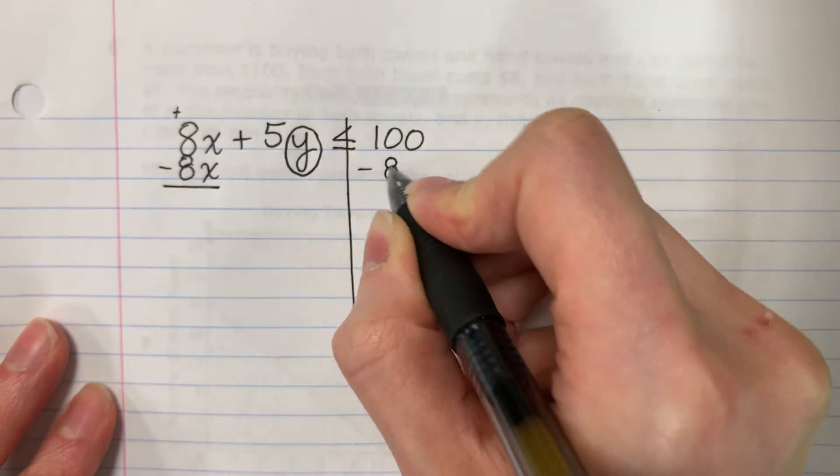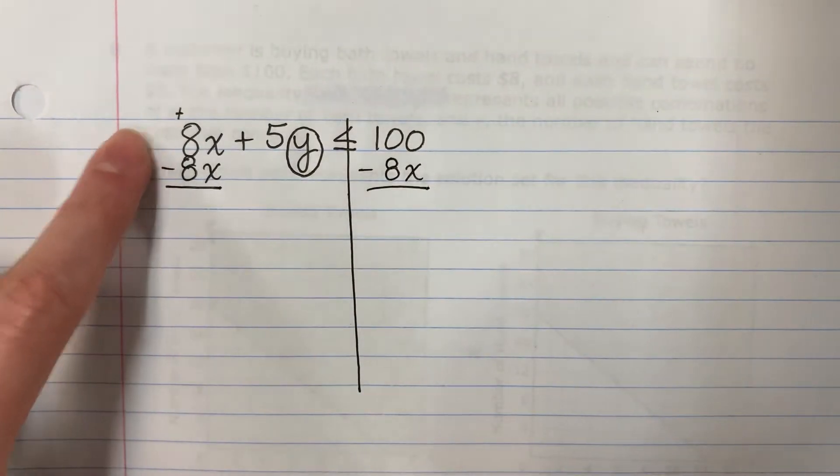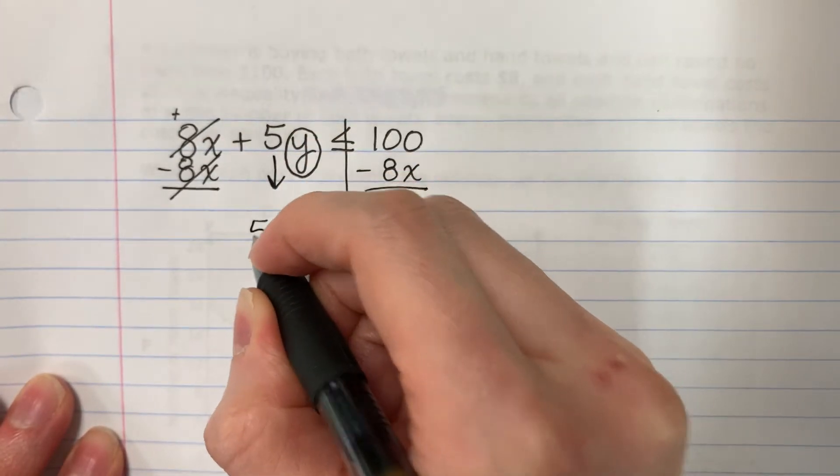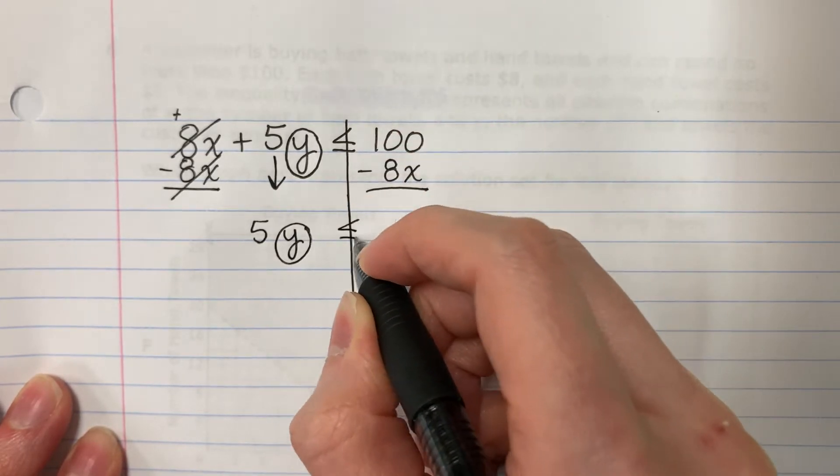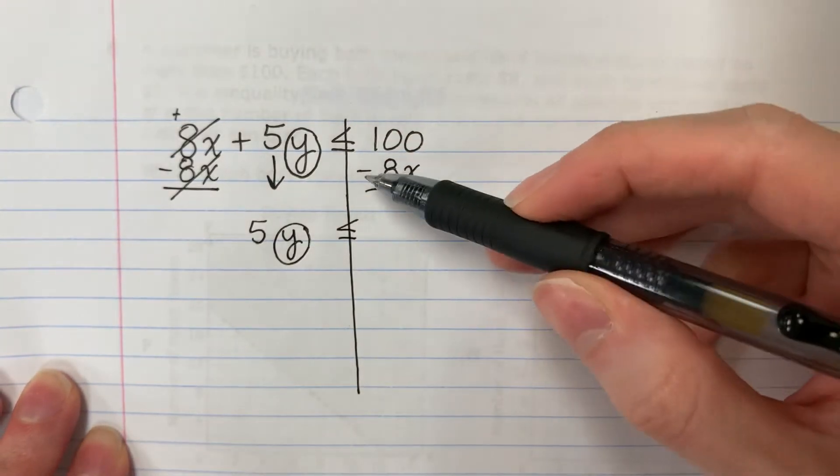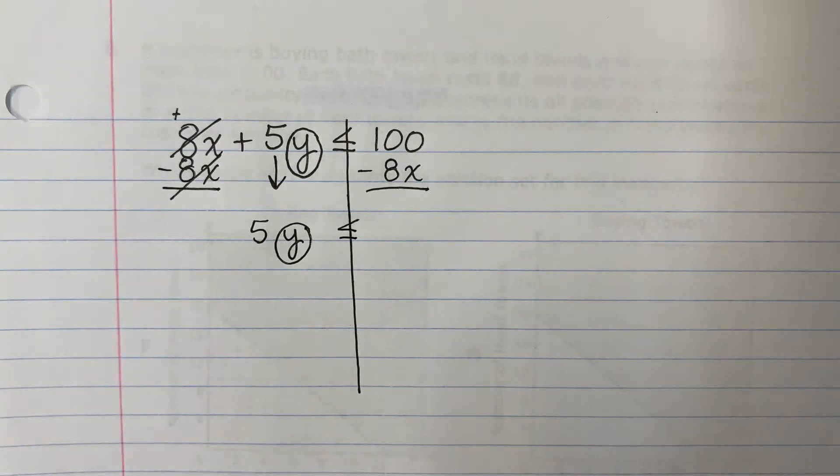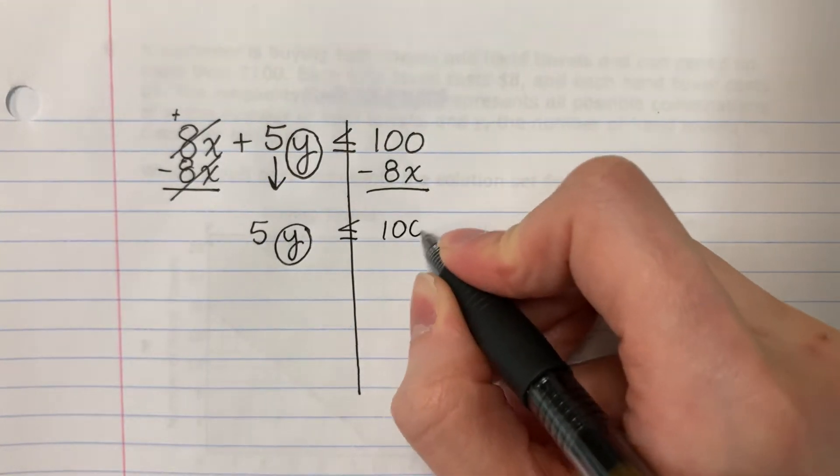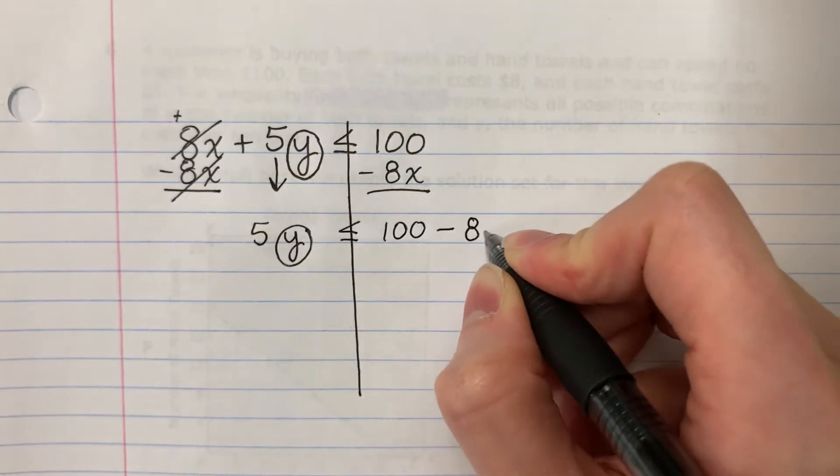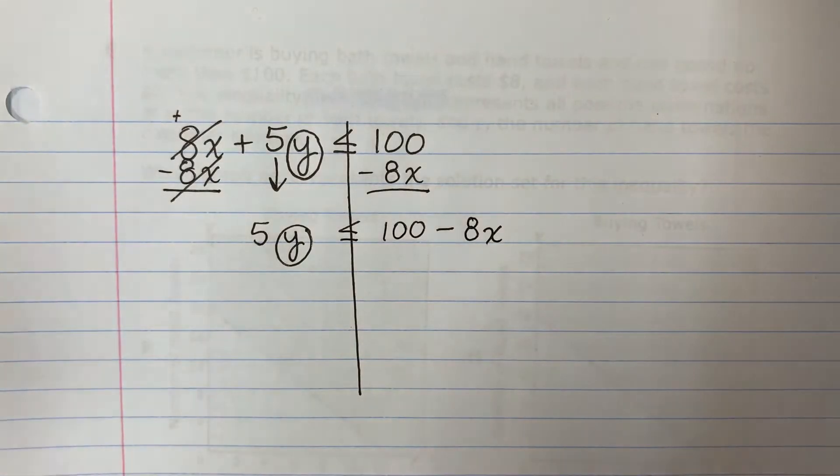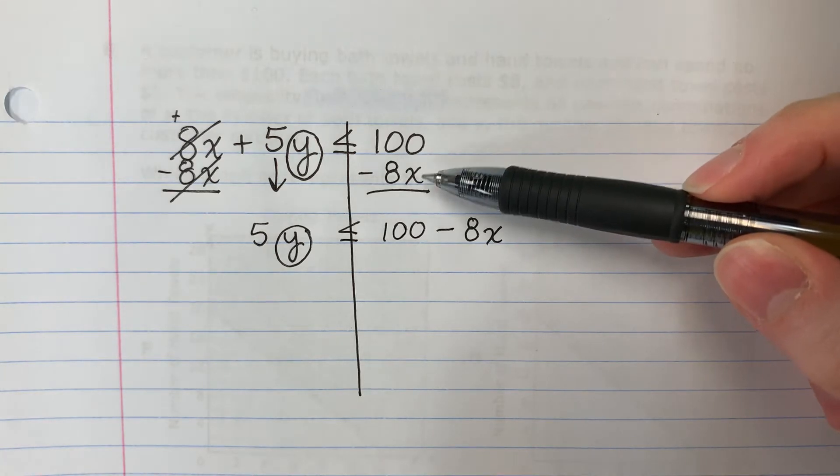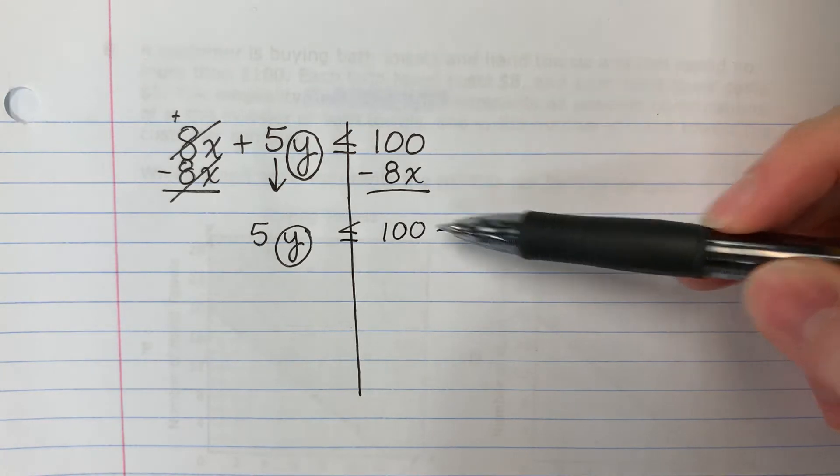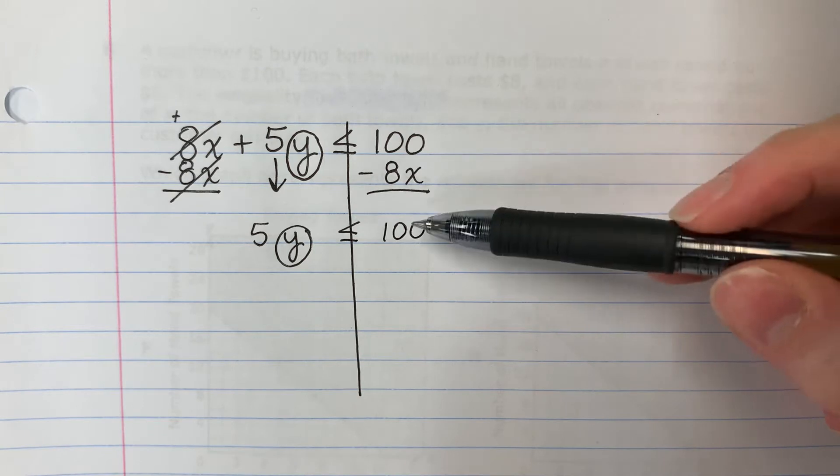Copy. Minus 8x. 8x minus 8x is 0. Copy down 5y. Circle. Copy less than or equal to. 100 minus 8x. You're going to copy. Why? Because they are not like terms. Here there's no letter. Here there's x. So if they have different letters, you copy.